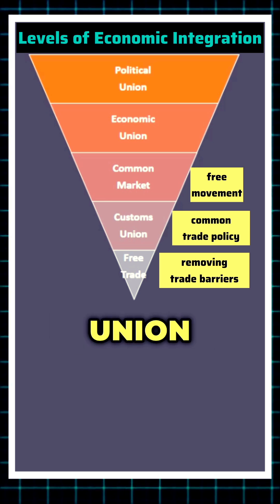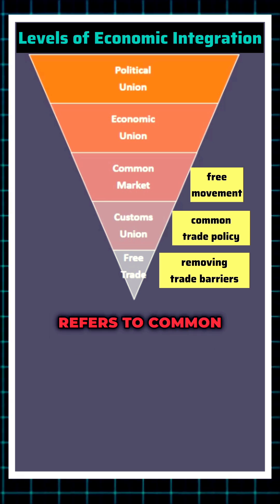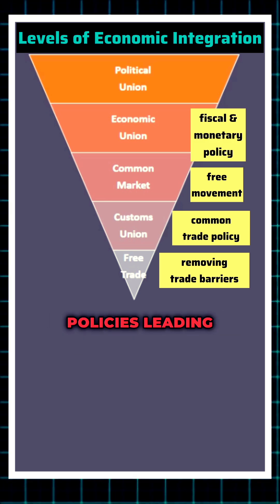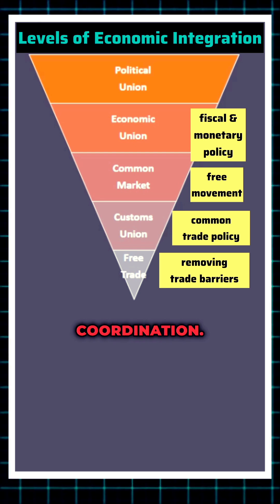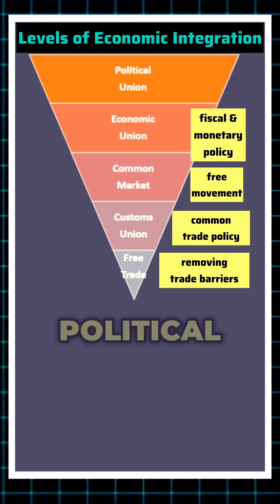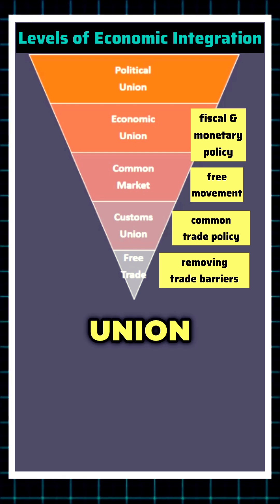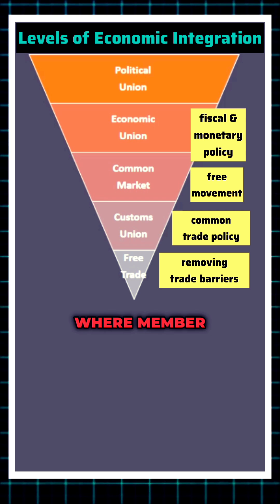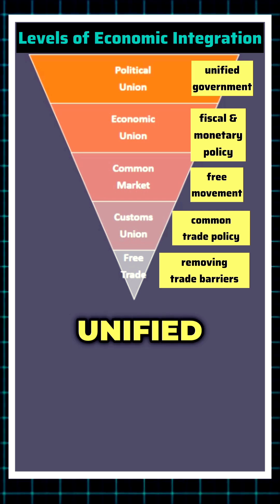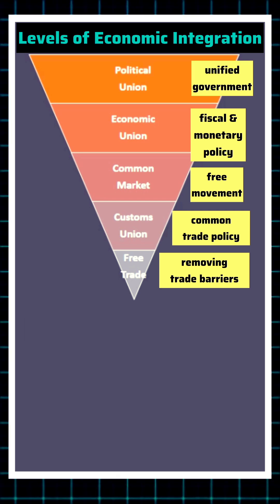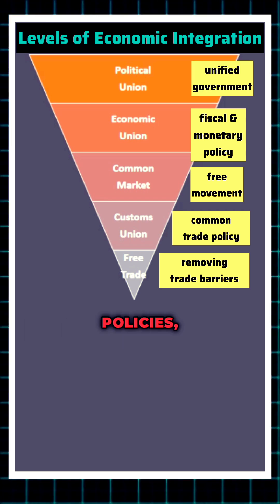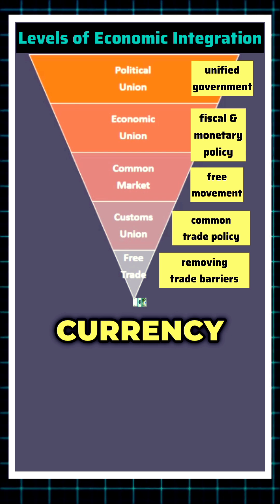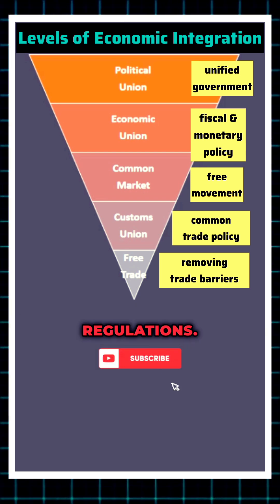Economic union refers to common fiscal and monetary policies leading to deeper economic coordination. Political union is the highest level of integration where member countries have a unified government, common tax policies, a shared currency, and standardized regulations.